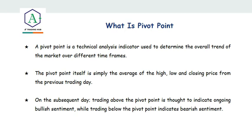Pivot points are indicators you can find on any trading platform — MT4, MT5, TradingView — they are free indicators, not for sale. On TradingView, you just search on the indicator bar for pivot points and pick it from there. There are examples showing how to pull up pivot points on MT4 and TradingView so you don't have any issues. This is an indicator most traders use; I personally use it for intraday trading too.